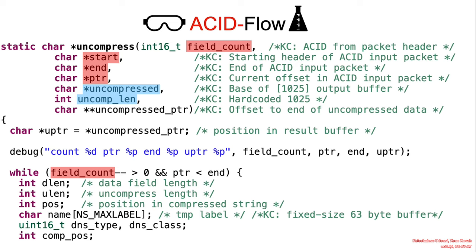So essentially, the function is going to parse the packet record by record. And that's why we have this attacker controlled loop exit condition, because that's the field count. That's that number in the packet I asked you to pay attention to. If I remember correctly, it's the an count value.